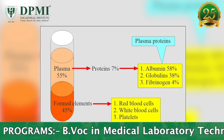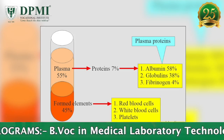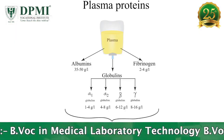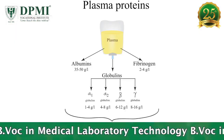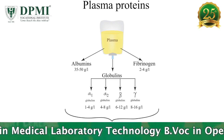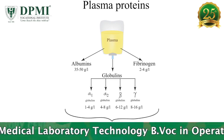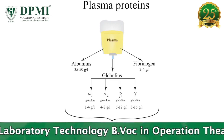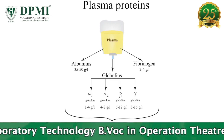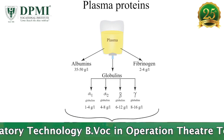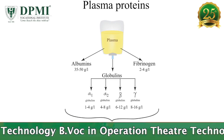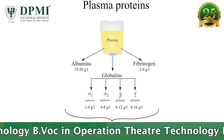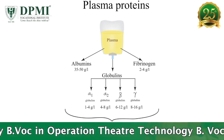The various plasma proteins are a complex mixture of simple proteins such as albumin, globulins, fibrinogens, glycoproteins, lipoproteins, complement enzymes, and various coagulation factors.